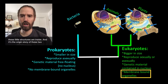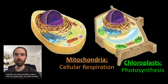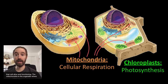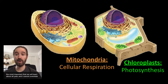That's what all of these little structures are inside. And it's the origin story of these two organelles — the chloroplast and the mitochondria — that we are going to learn about today. Just like our body contains organs that do certain jobs, our cells contain organelles, and each organelle performs a function that helps to keep that cell alive and functioning. The mitochondria is the organelle where cellular respiration takes place, and the chloroplast is where photosynthesis takes place. These two chemical reactions are some of the most important that we will learn about all year, and I cannot overstate just how much life on our planet depends on these two processes.